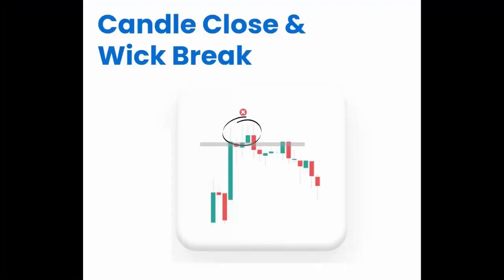Now let's see another example: candle close and wick break. If you see after the breakout that other candles form wicks, then there is also a chance for a false breakout.